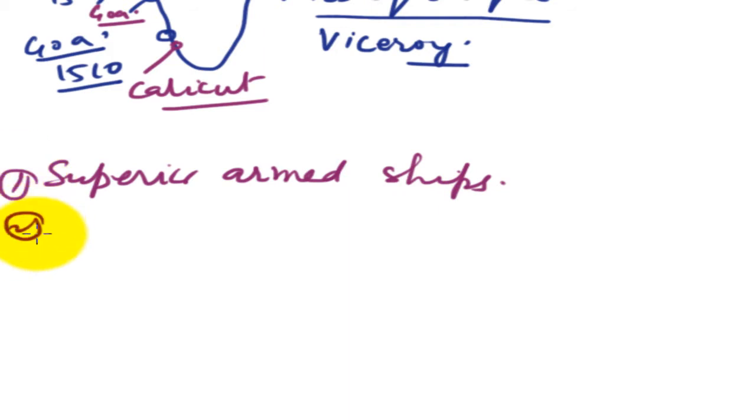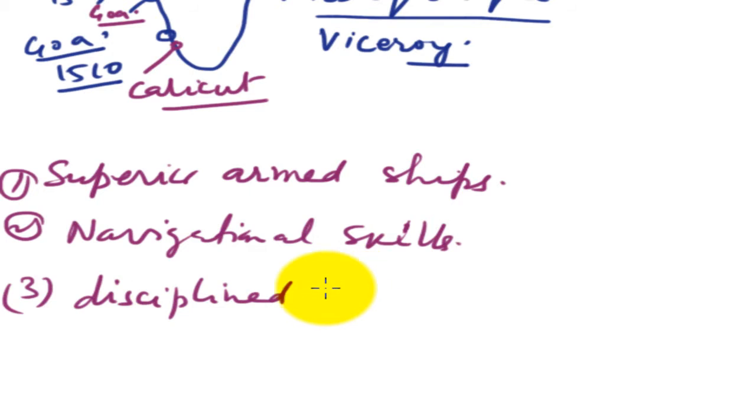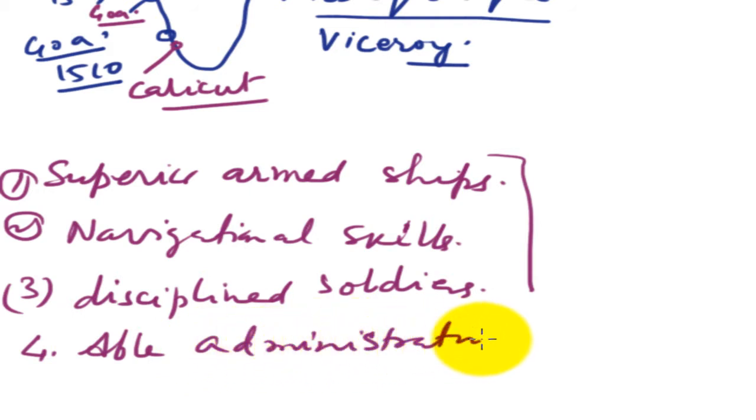The second thing was navigational skills. They were good in the sea, navigational skills. They were very good navigators. Third was the disciplined soldiers, trained soldiers. And they were also having the able administrator, like Albuquerque. Able administrators. These were the factors by which these Europeans became more successful in India. And Portuguese were the first to show this type of skill. And they established the good hold in India initially.